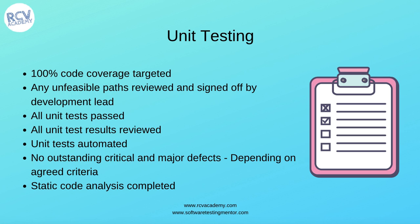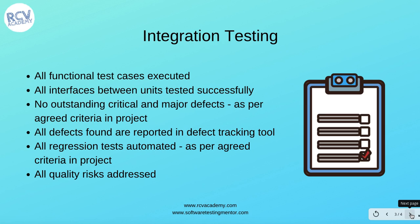There shouldn't be any major and critical outstanding defects — this can be agreed within the team. In some places the requirement might be no outstanding defects at all, or only no critical outstanding defects with the rest addressed later. This definition of done is discussed and agreed upon by the whole agile team for each level or iteration. Finally, static code analysis should be completed. These are some of the criteria that could be defined as the definition of done for unit testing.